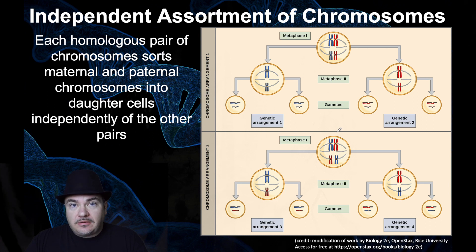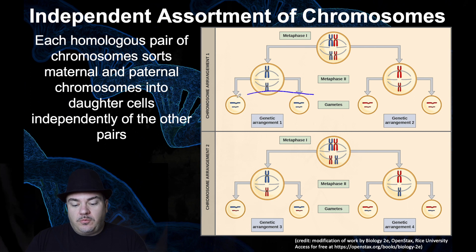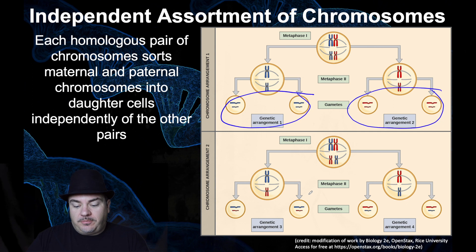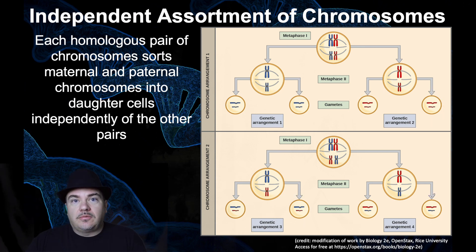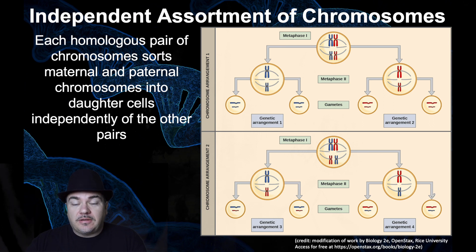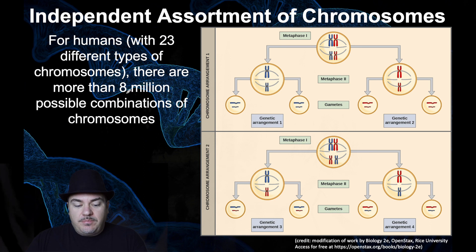The homologous chromosomes sort independently of the other pairs of homologous chromosomes. So for this organism with only two types of chromosomes, one individual can make four different types of gametes: blue one and blue two, red one and red two, blue one and red two, or red one and blue two. We as humans have 23 different types of chromosomes, and each of the 23 sorts independently of the others. With 23 different chromosomes sorting independently, one individual person can make more than eight million different combinations of gametes due to independent assortment — a huge amount of genetic variation.